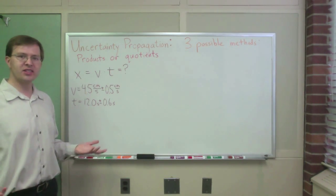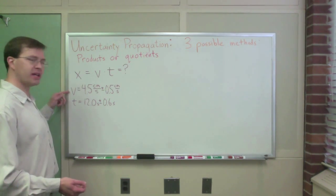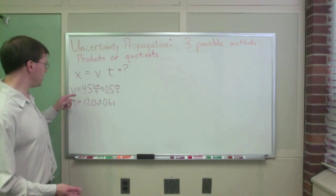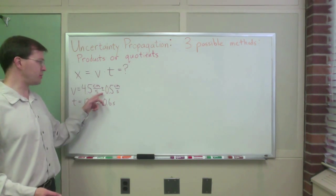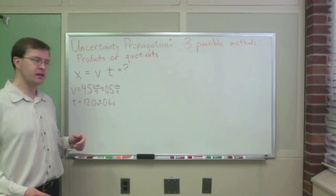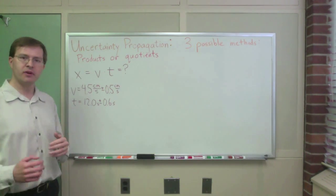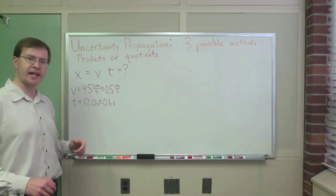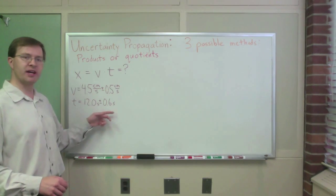And that's a product. Let's just imagine that I have measured the speed of my object to be 4.5 centimeters per second, plus or minus 0.5 centimeters per second. And I've measured the time of travel to be 12.0 seconds, plus or minus 0.6 seconds.